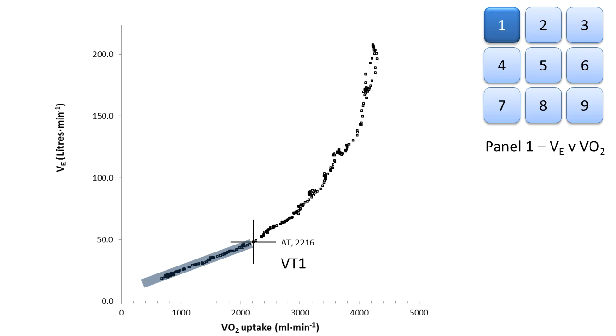Beyond this point, the fuel shifts to primarily glucose and there is an increased CO2 production from anaerobiasis. This results in an increased CO2 production, and this increased CO2 drives ventilation higher and out of proportion to the increase in oxygen uptake.